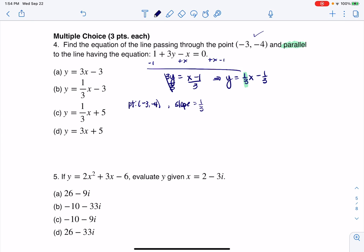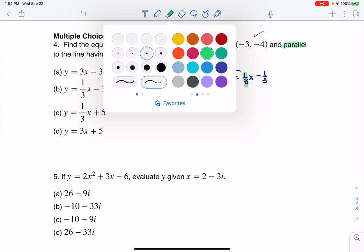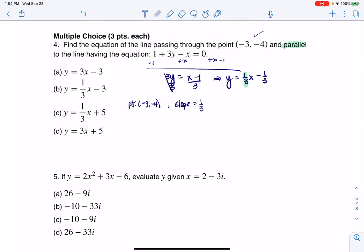Now just as a counterexample, and I want to stress this is not what happened in this problem, but if this had not said parallel, if this had said perpendicular, then the slope wouldn't be 1/3, it would be the negative reciprocal, so it would have been -3. Again, it doesn't say any of that, so I'm going to erase all of this. Just wanted to mention it.